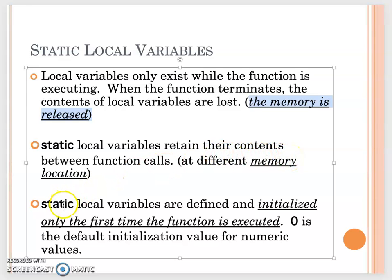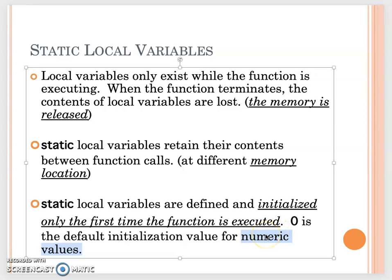When you define a static variable, you also initialize it only one time. The first time the function executes, you can initialize the static variable. If you don't initialize it, it will have a default value of zero for numeric types like int and double. For characters, the default is zero ASCII value, and for strings, it is an empty string.